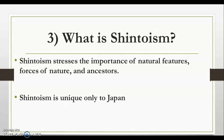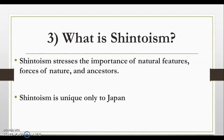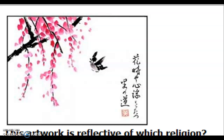What is Shintoism? Shintoism stresses the importance of natural features, forces of nature, and ancestors. This is where Chinese influence comes into play, because Confucianism stresses the importance of ancestor worship, and that spread to Japan — but Japan added its own spin by focusing on nature. Shintoism is unique only to Japan; it is the only country in the world that practices Shintoism. A test question: this artwork is reflective of which religion? The answer is Shintoism — on the left you see a cherry blossom tree and on the right a bird, representing natural features and forces of nature. Whenever you see pictures depicting nature, it's Shintoism.